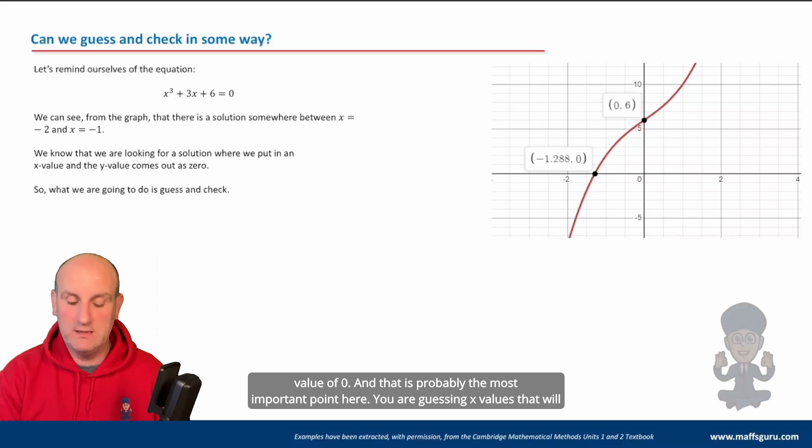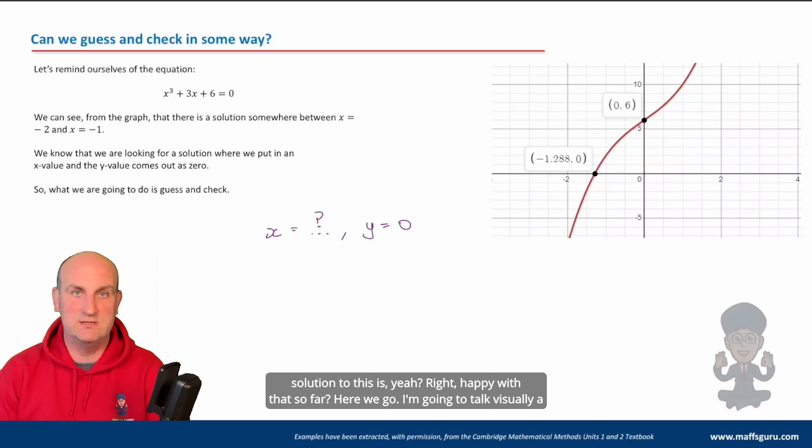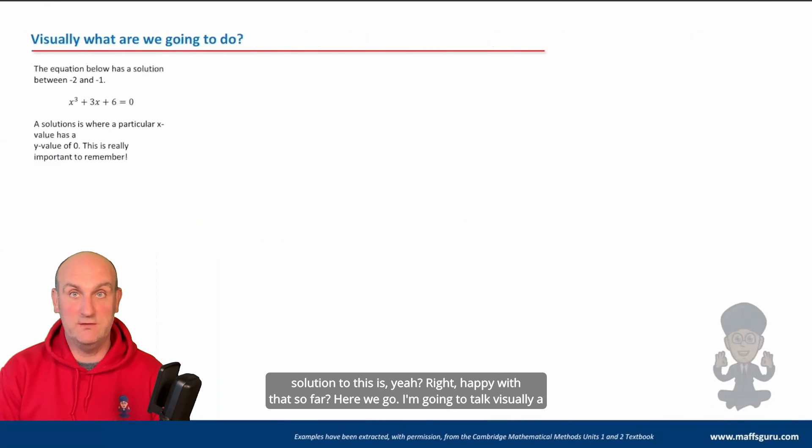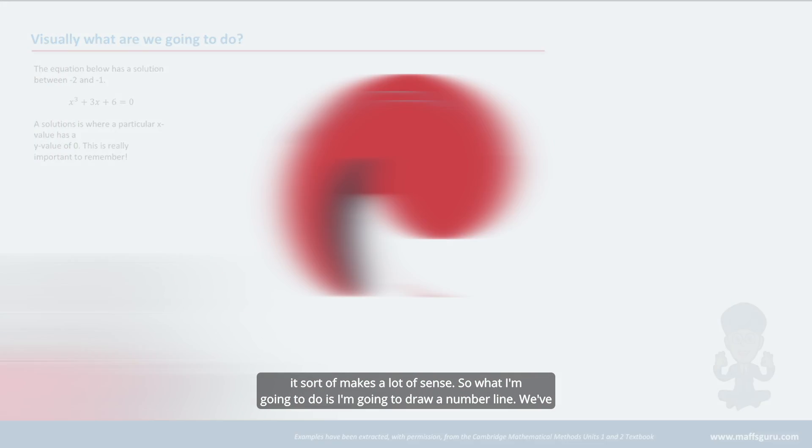And that is probably the most important point here. You are guessing x values that will give you a y value as close to zero as you possibly can, because that's what a root is. That's what a solution to this is. Right. Happy with that so far? Here we go. I'm going to talk visually a little bit about what this process actually does, because if you understand it visually, the rest of it sort of makes a lot of sense.